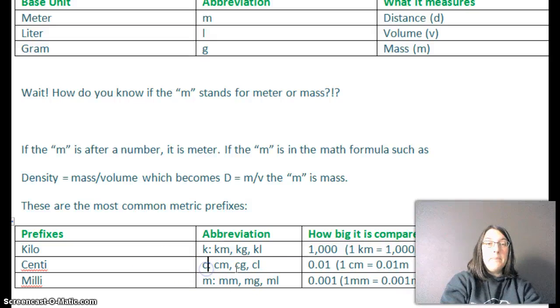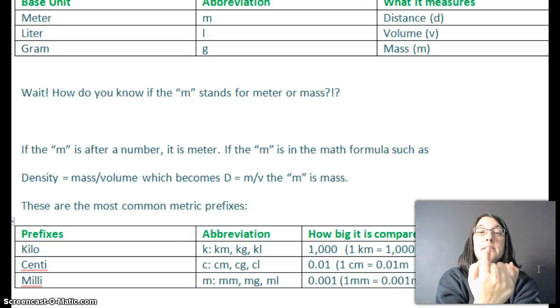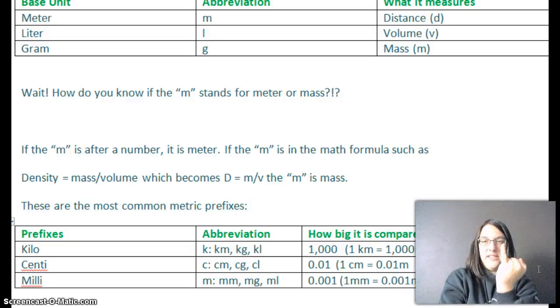Centimeters. Centi is abbreviated C, but again, it's a prefix, so you never see it by itself. It's always centimeter, centigram, centiliter. And centi means one hundredths, so 0.01, like a penny. There's a hundred pennies in a dollar. Centi, one cent, one penny. Easy to remember. So one centimeter equals 0.01 meter, or a hundredth of a meter. And if we go the other way, a hundred centimeters equals one meter. So one meter has a hundred centimeters. A centimeter is approximately the width of your pinky finger's fingernail. So your pinky finger fingernail is about a centimeter.